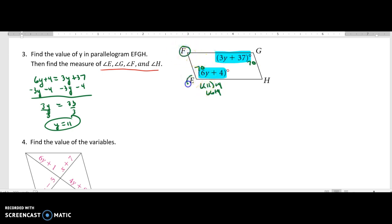But how do I find F and H? Well, remember, these angles are supplementary. So angle F is 180 minus 70, which is 110. And by opposite angles are congruent, angle H is 110.